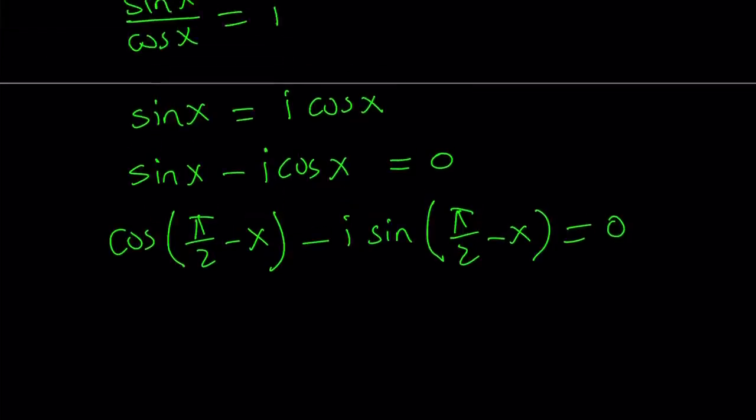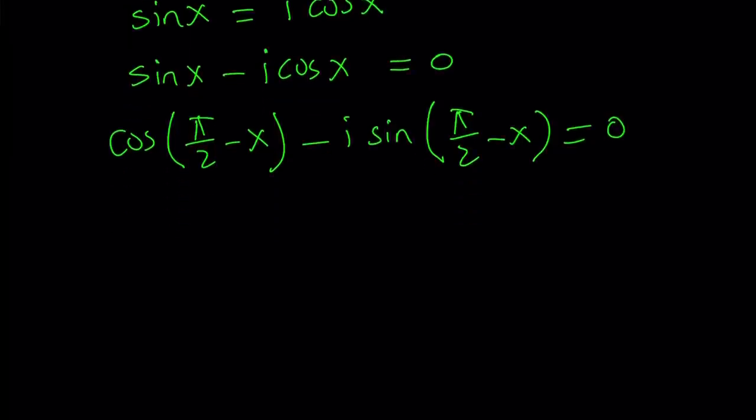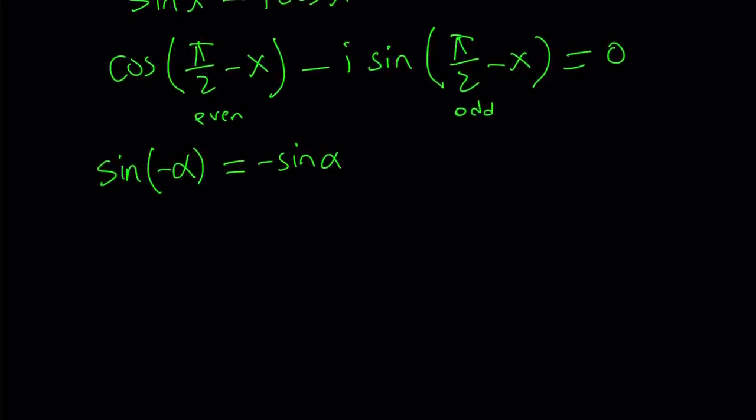Now, I would like to get rid of the minus sine. But that's easy because sine is an odd function. So sine of negative alpha is negative sine of alpha. So I kind of have like a negative sine alpha here. By negating my angle, I'm going to be able to get rid of the negative sine. But cosine is even. So even. Odd. Everything will be taken care of. If we replace pi over 2 minus x with x minus pi over 2.